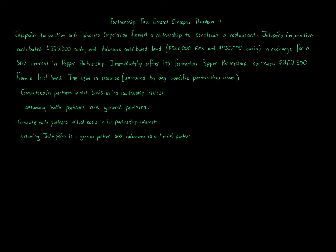Alternative one assumes both partners are general partners. They're forming a partnership — Jalapeno and Habanero. Jalapeno contributes cash of $525,000; Habanero contributes land with a basis of $455,000. On contribution there are no tax consequences to the parties if property is being transferred — and property is everything, broadly defined, except services.